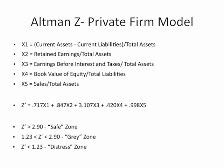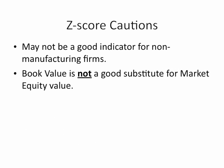A couple of things to note about the Z-score: it may not be as good an indicator for non-manufacturing firms, because typically non-manufacturing firms don't have a very big asset base in relation to their sales. Secondly, as Altman points out in his research, book value of equity is not necessarily a very good substitute for market value of equity, so if you could come up with a more direct market value estimate, that might be more helpful.